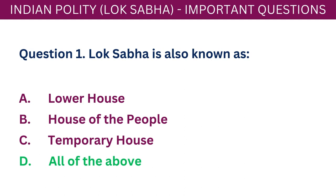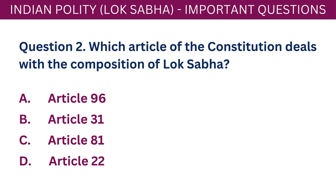Question 2: Which article of the Constitution deals with the composition of Lok Sabha? A. Article 96. B. Article 31. C. Article 81. D. Article 22. The correct answer is C - Article 81.